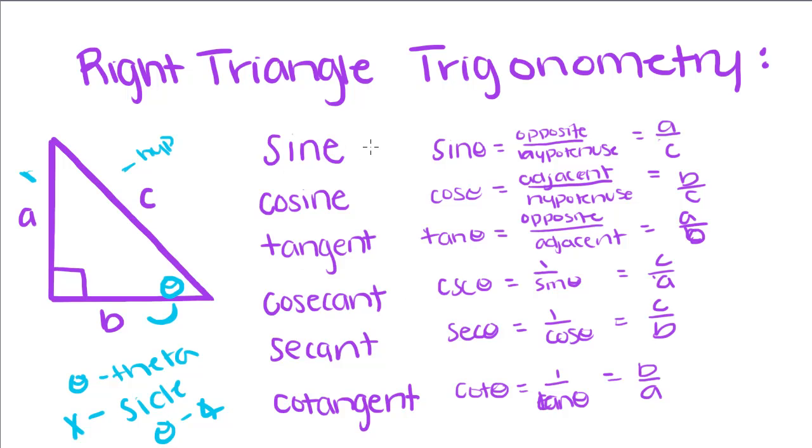Cosecant is the inverse of sine. The inverse is just 1 over something. So, cosecant is 1 over sine. If we took 1 over A over C, and we used our keep-change-flip rules, where we keep the top of the fraction,